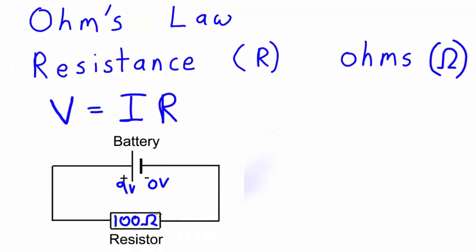Then we could use Ohm's Law to calculate the current that flows through this circuit. Let's give it a go. We need to rearrange our equation for the current, which is I.